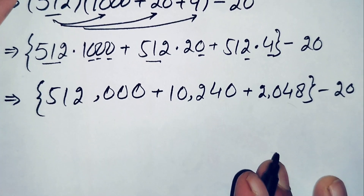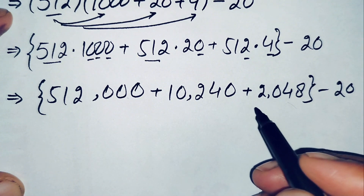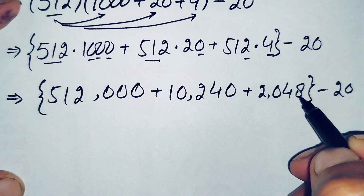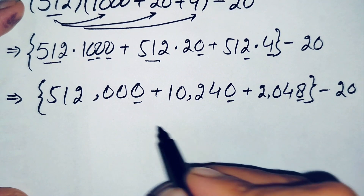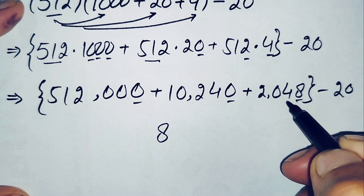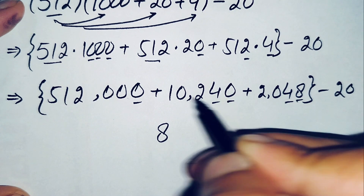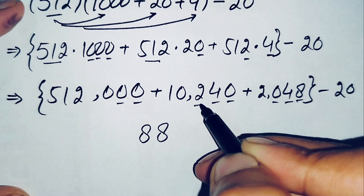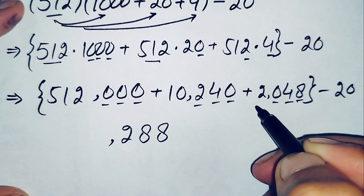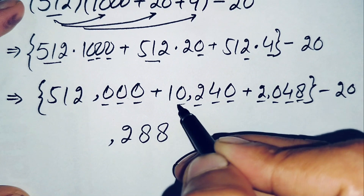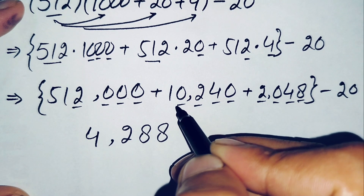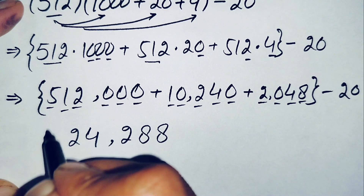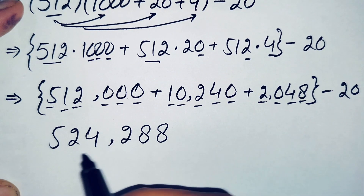Now we add these three numbers and then subtract 20 from the result. Starting from the ones position: 8 plus 0 plus 0 is 8. Tens position: 4 plus 4 plus 0 is 8. Hundreds position: 0 plus 2 plus 0 is 2. Thousands position: 2 plus 0 plus 2 is 4. Ten-thousands position: 5. So the addition of these numbers gives 524288, minus 20.